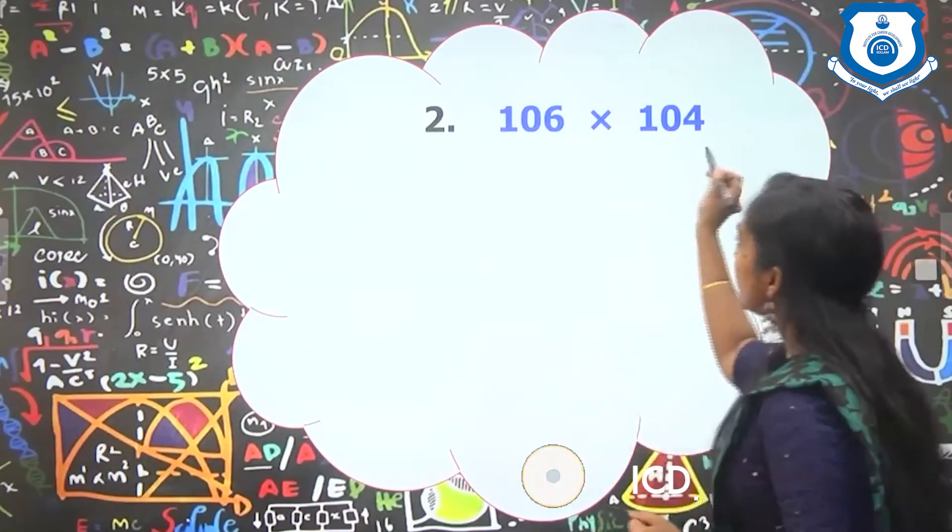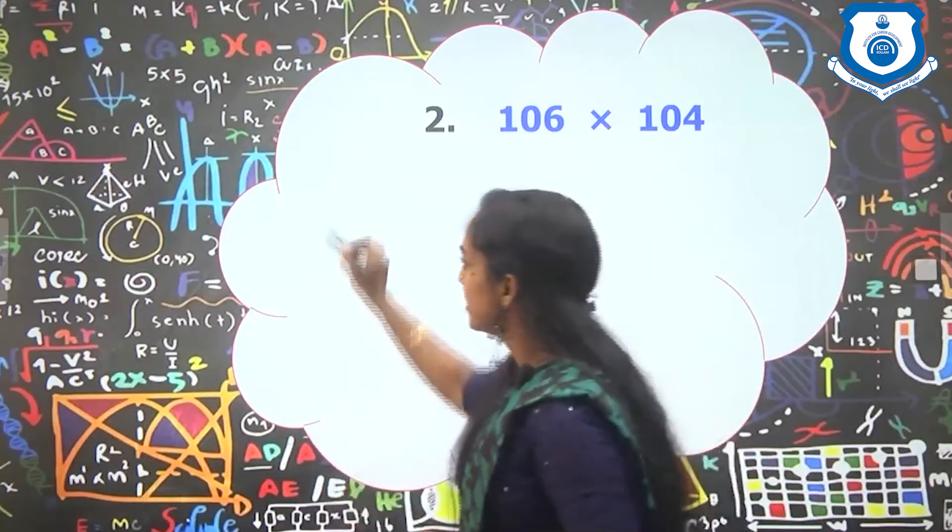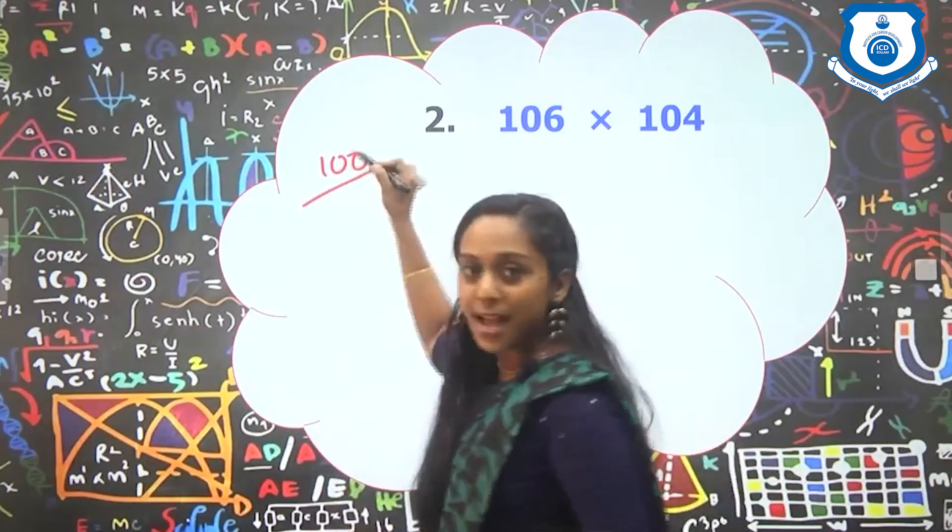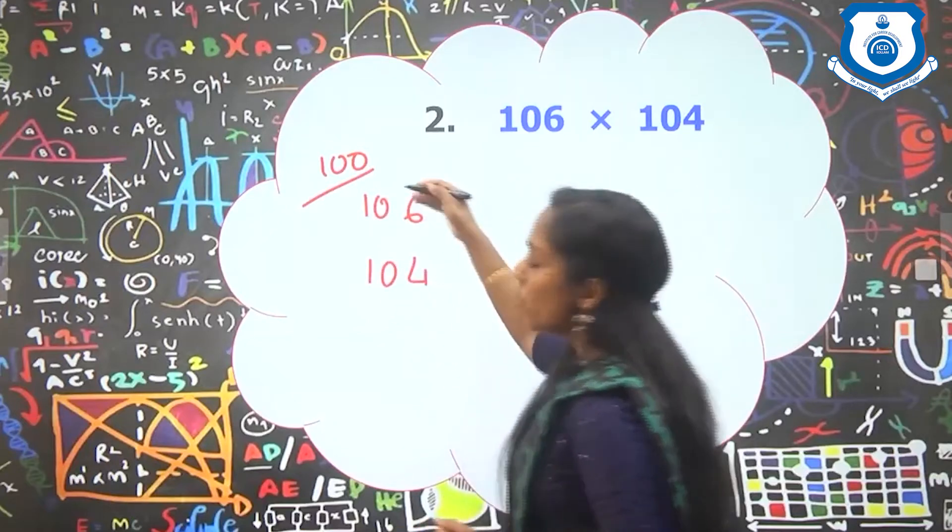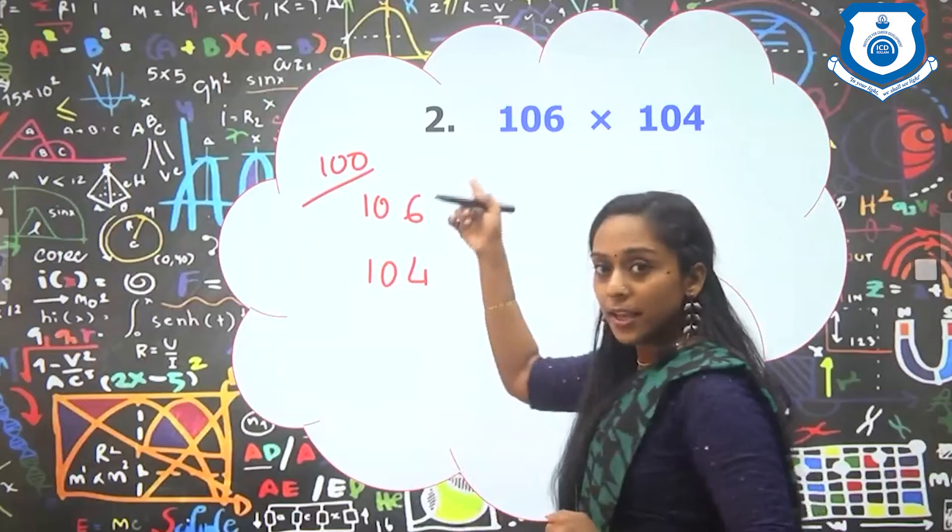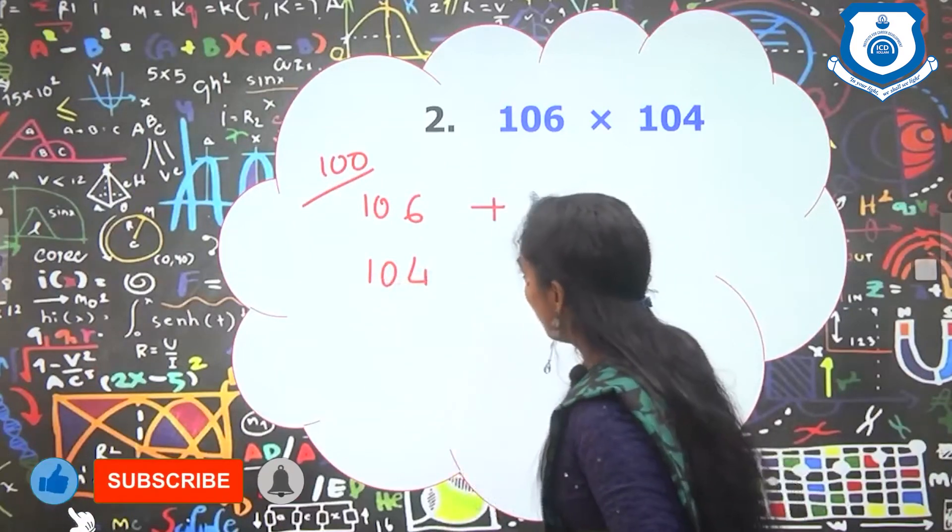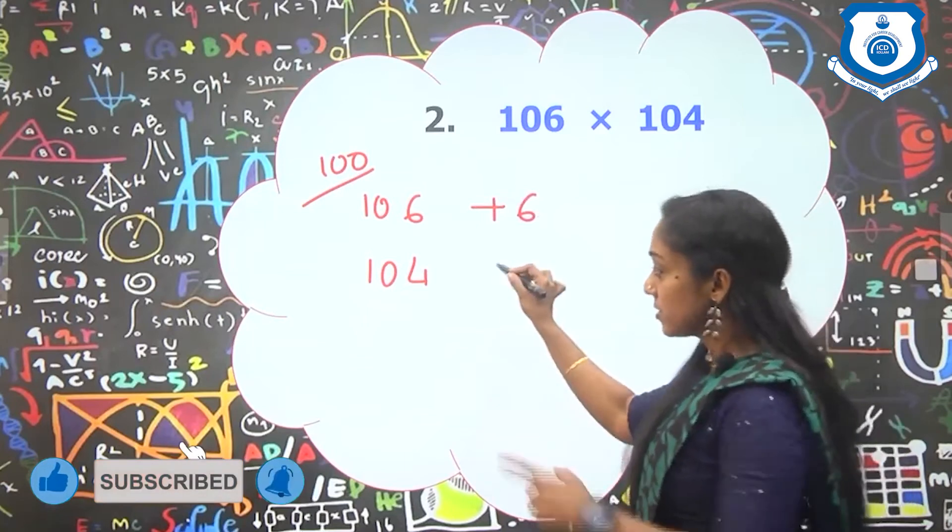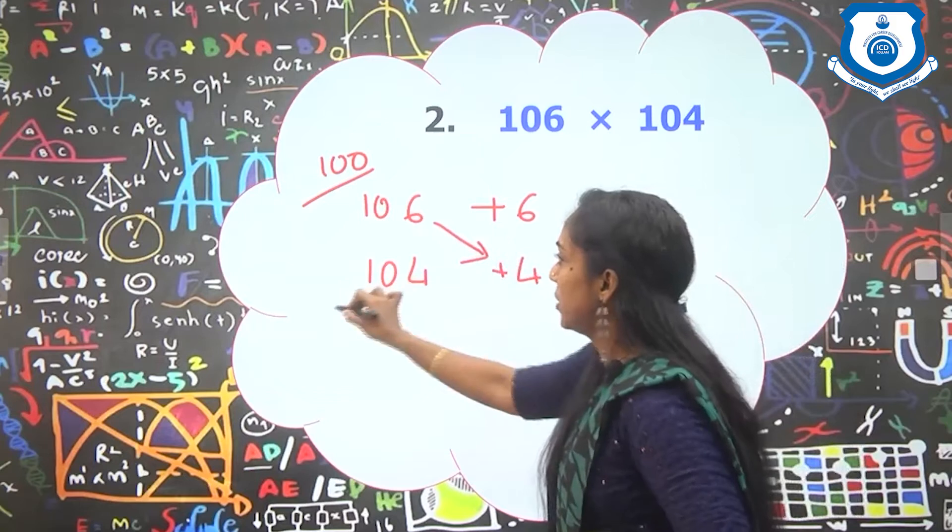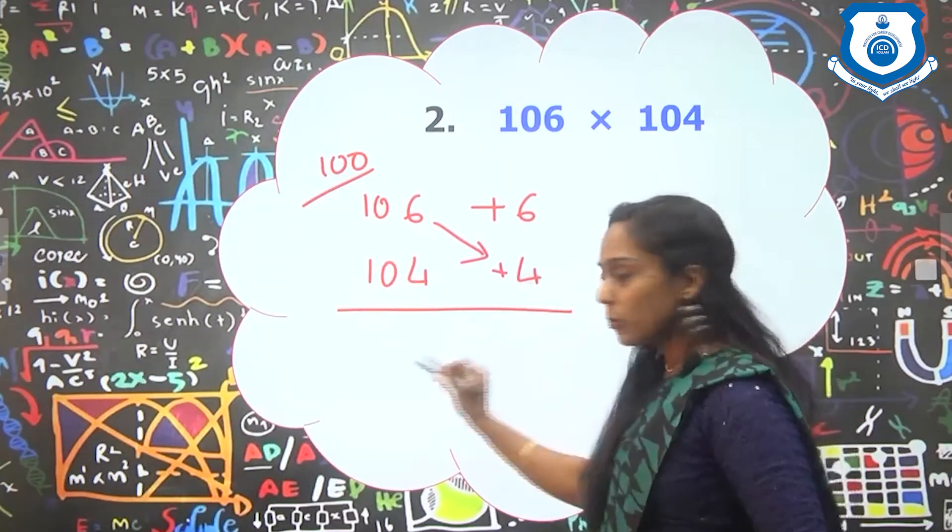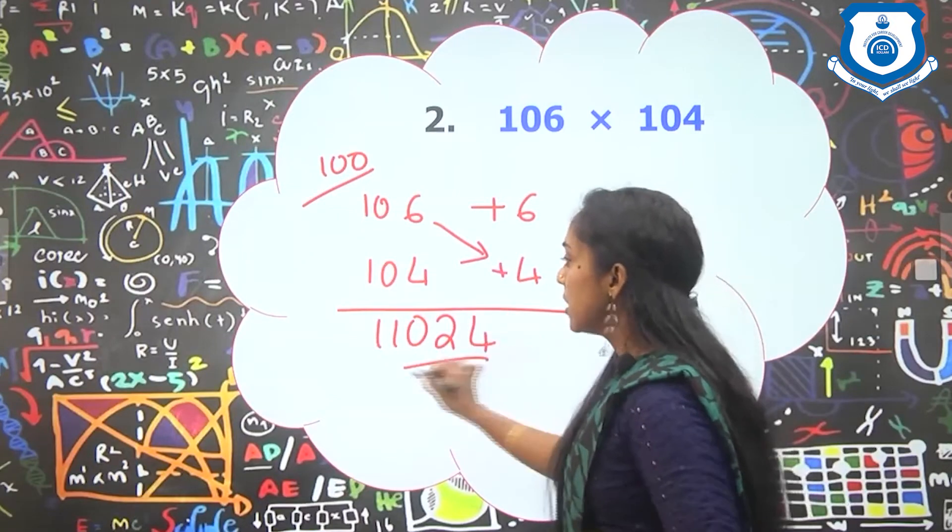Question number 2: 106 into 104. Both these numbers are coming into the base 100. So here also I am choosing the base at 100. 106 is how much greater than 100? Since in this question, our number is greater than the base, this is plus 6. Here also it is greater than the base. So this is plus 4. And in the second step, 106 plus 4 is 110. 6 into 4 is 24. So our answer is 11024.